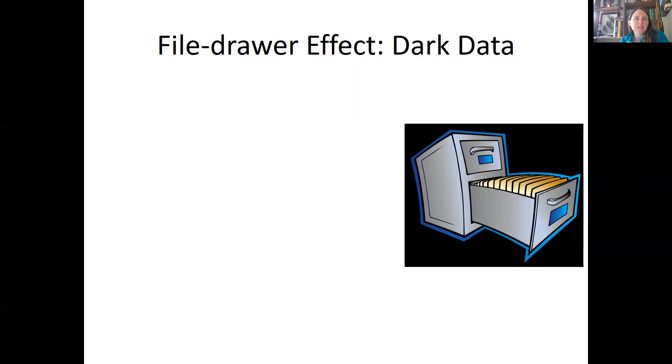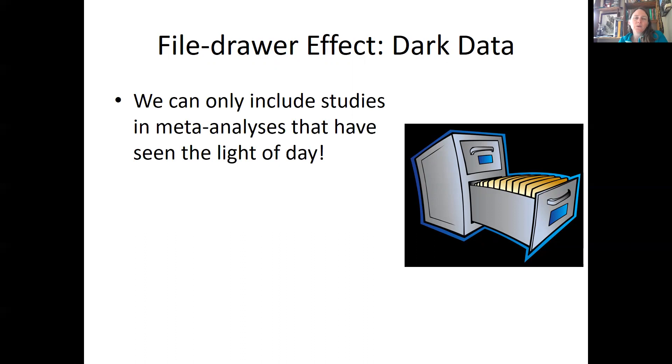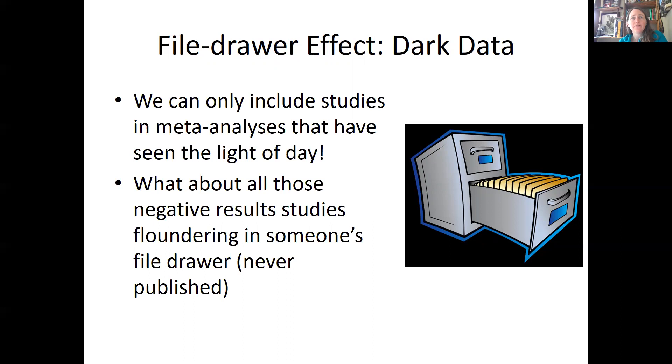Now, oftentimes if you do a study and you don't get a very strong effect, you'll just put it in the file drawer, right? You're not going to publish it because nobody wants to publish studies that don't show strong effect. And so we can only really include studies in the meta-analyses that have seen the light of day, not the ones that are hiding in someone's file drawer. But this is kind of a problem because if you're looking at an effect size and there's a whole bunch of studies that have been done showing no effect, those really should be included in your meta-analysis. So negative results studies floundering in someone's file drawer could really influence the outcome of your meta-analysis, but they've not been published. So how do you find them?